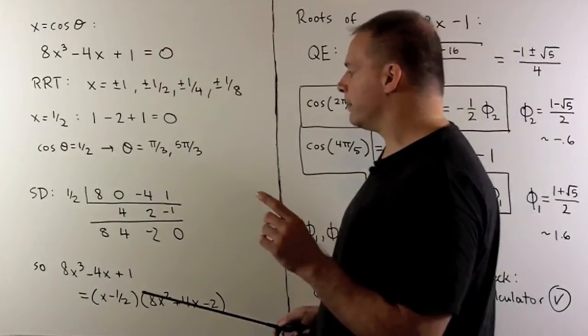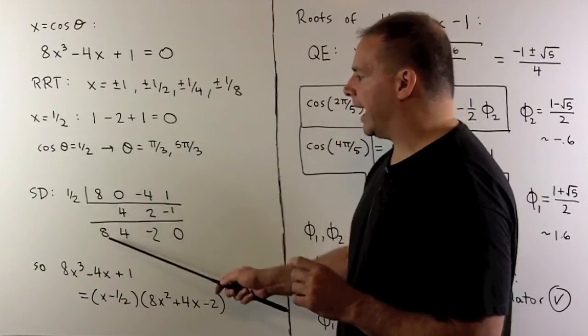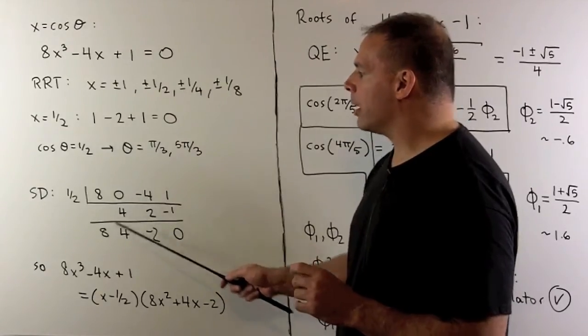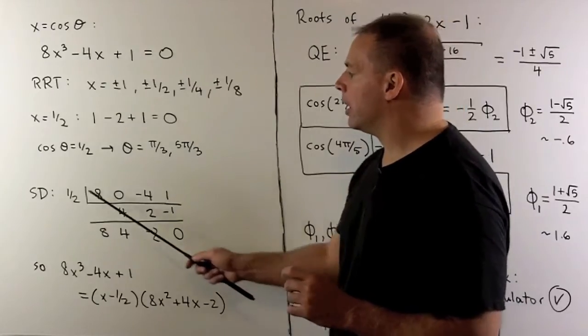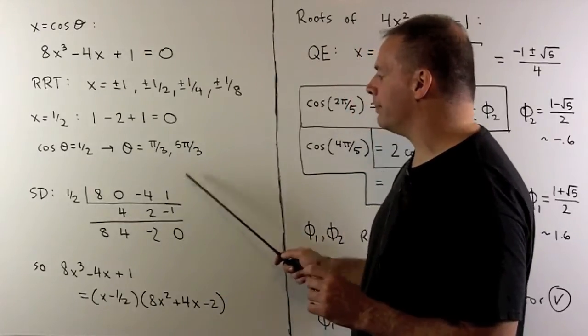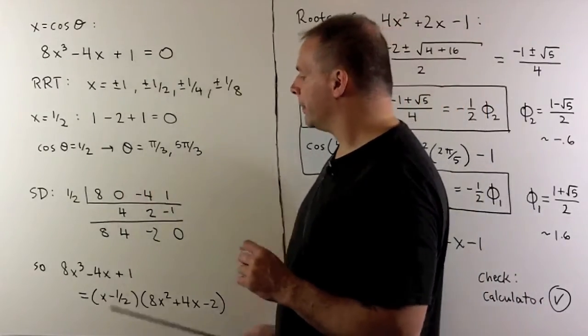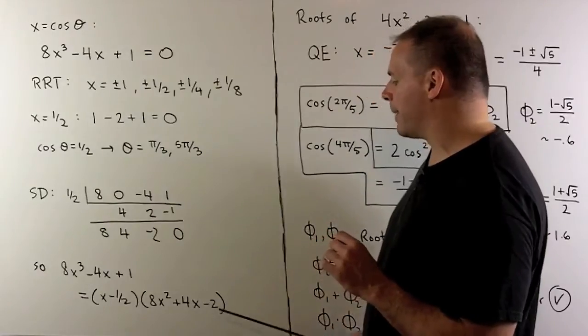With synthetic division, put our 1/2 here. We load in our coefficients. I drop the 8, multiply by 1/2, we get 4. Add, we get 4. Multiply by 1/2, we get 2. Add, we get -2. Multiply by 1/2, we get -1. Add, we get zero. So that means I could factor our polynomial as (x - 1/2) times (8x² + 4x - 2).